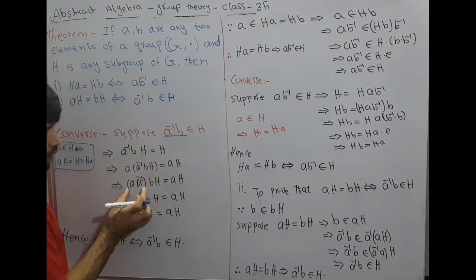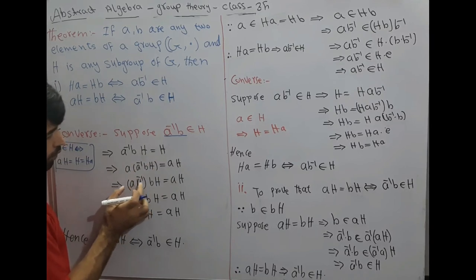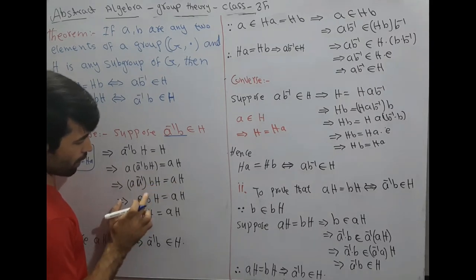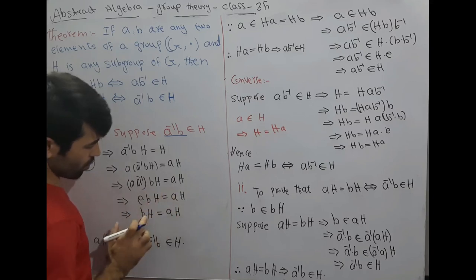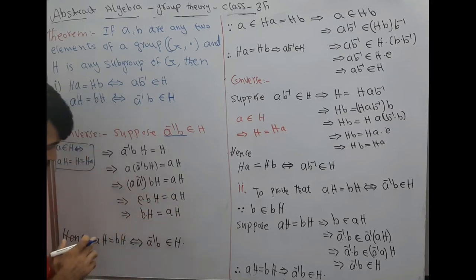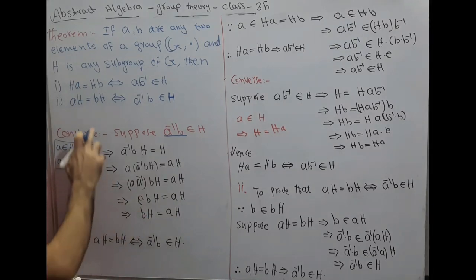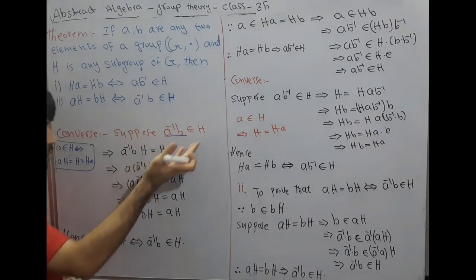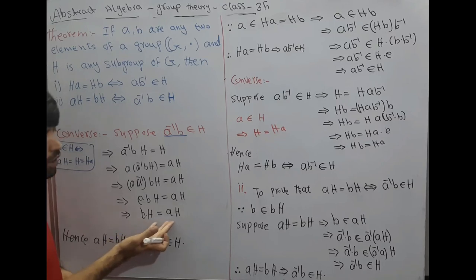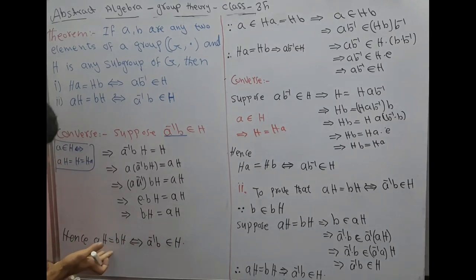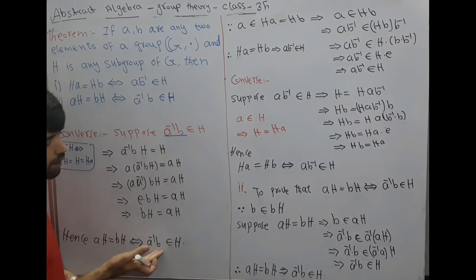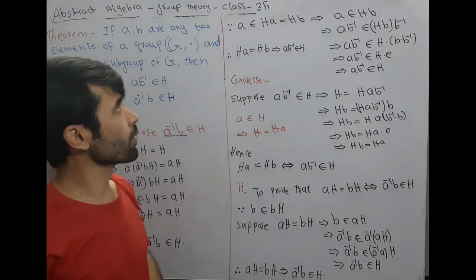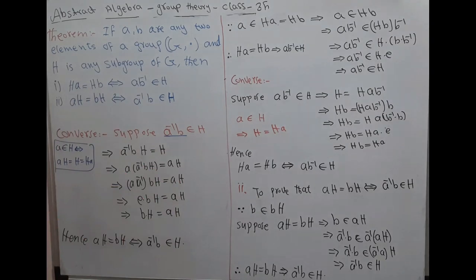Multiplying both sides by a and using the associative axiom, we get a·a⁻¹·b·H = a·H. Since a·a⁻¹ = e, this gives e·b·H = aH, so bH = aH. Hence aH = bH if and only if a⁻¹·b belongs to H. This was the theorem which we proved. Thank you.